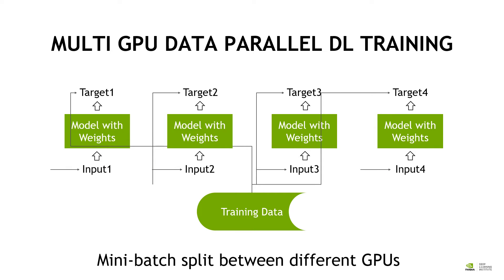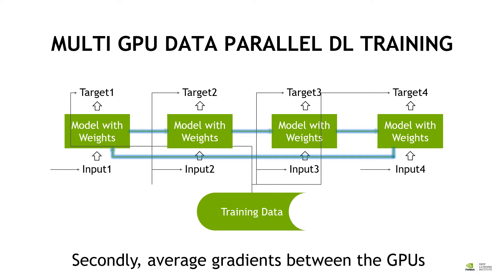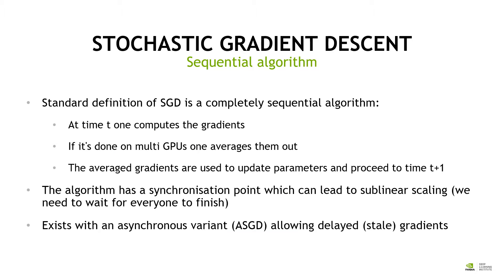This becomes clearer with the following animation. We want to implement data parallelism on four GPUs. First, we will have an identical copy of the model with the weights on all participating GPUs. Next, we copy every input data batch and the target vectors to all participating GPUs. Before doing the actual weight update, we synchronize all gradients that are locally computed on every GPU. This algorithm is known as stochastic gradient descent. In this form it is a completely sequential algorithm, as we must wait until all local gradients are computed before progressing to the next time step. For extreme scalability, this barrier becomes a bottleneck.